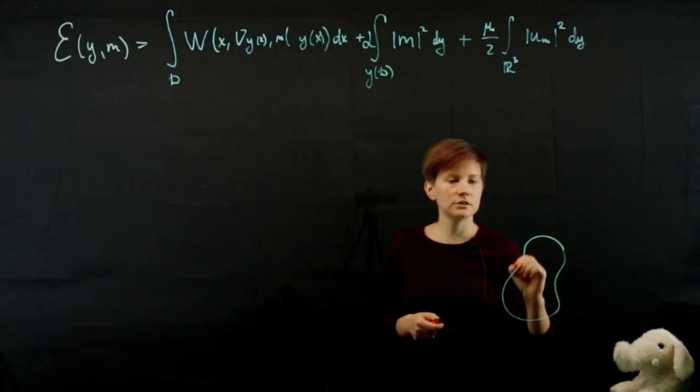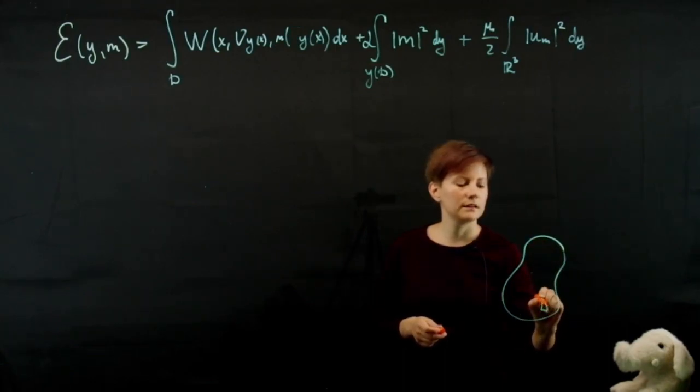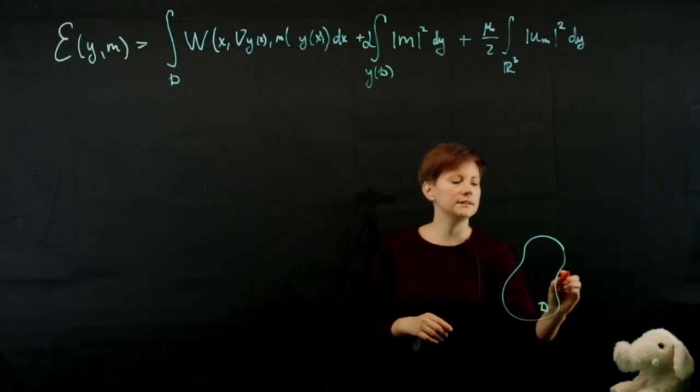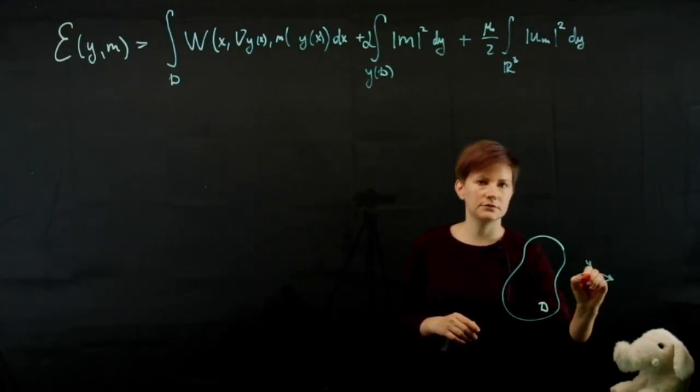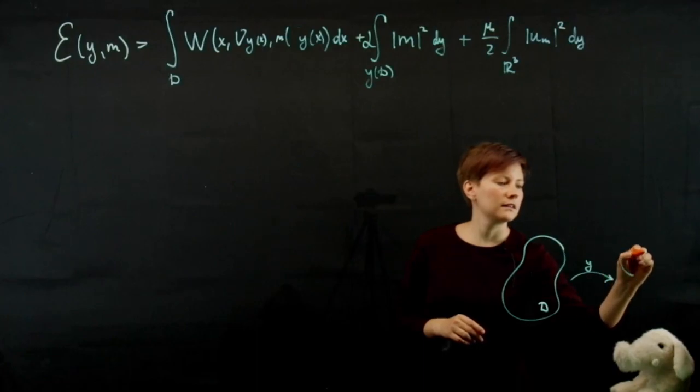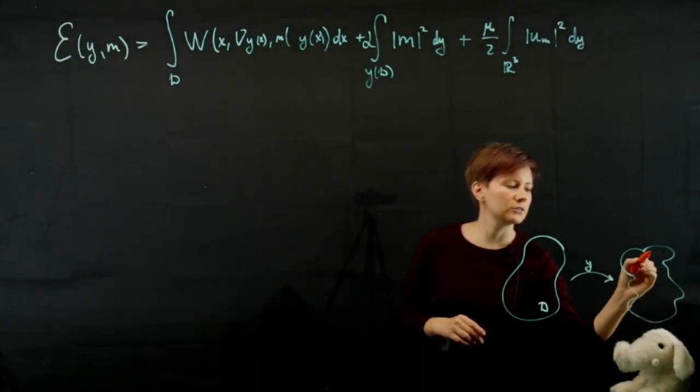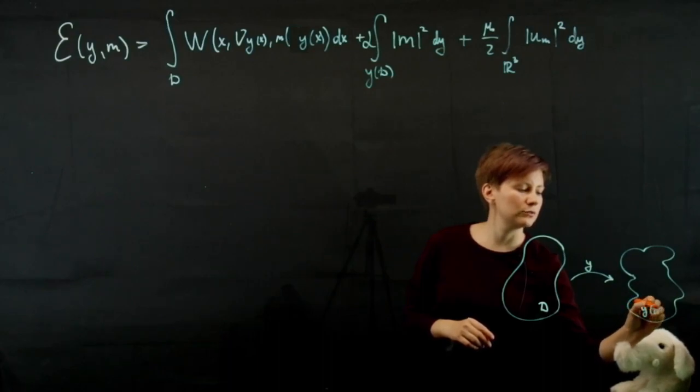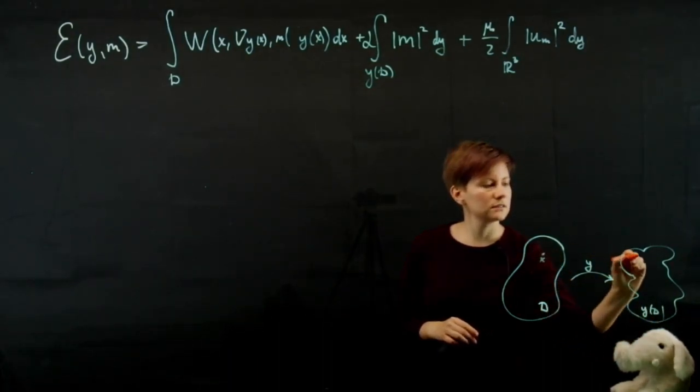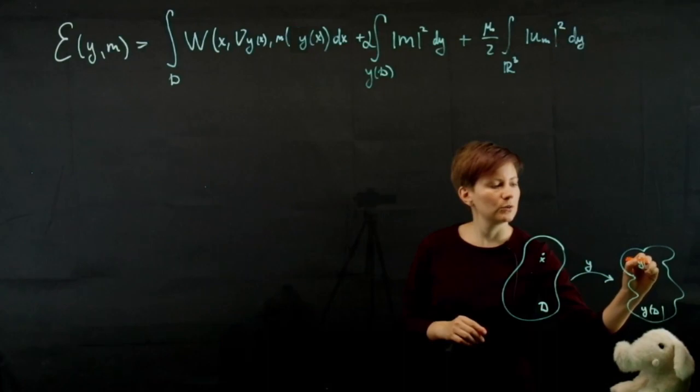The original configuration is occupying a domain D. Y is a deformation and so the resulting configuration will be Y of D. Here the point X moves to the point Y of X.